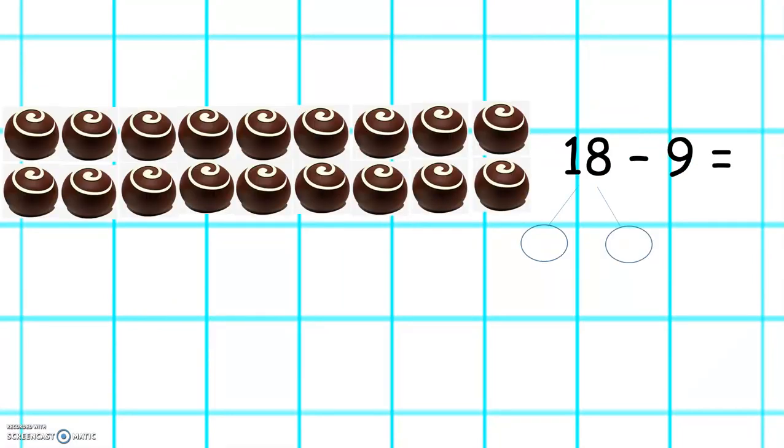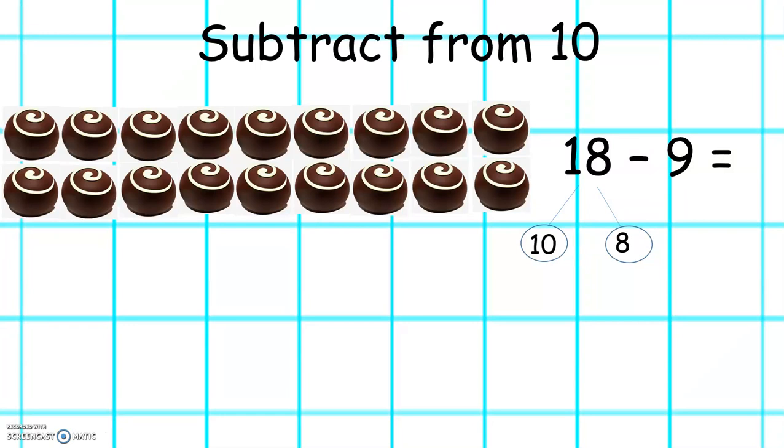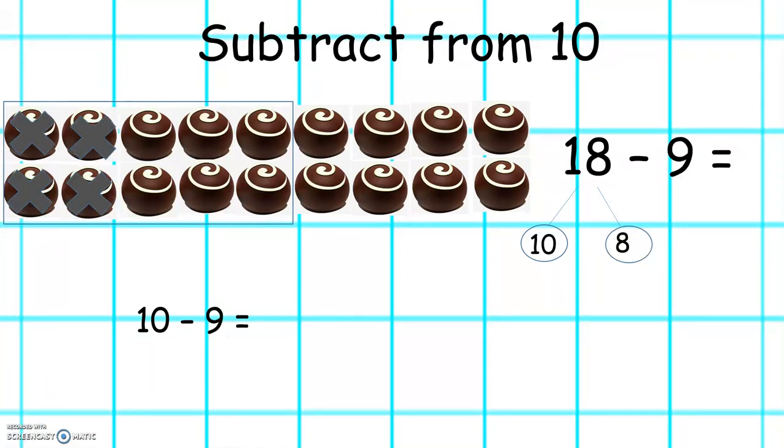Let's try this one. 18 take away 9. 1, 2, 3, 4, 5, 6, 7, 8, 9. In the box, we have 1 left.